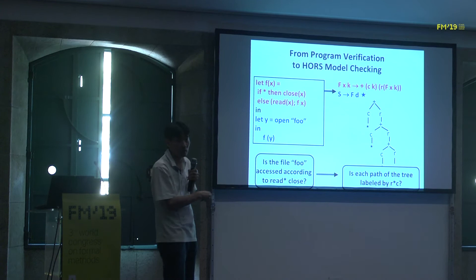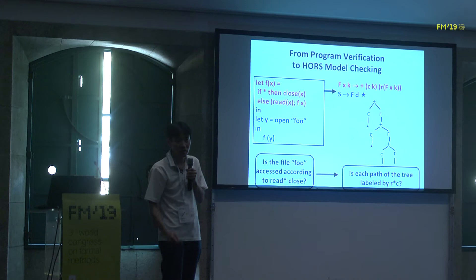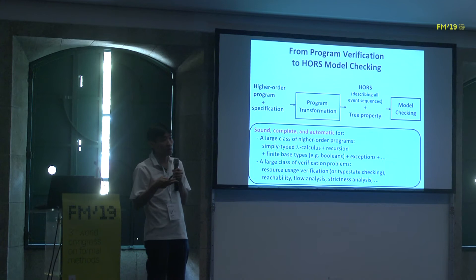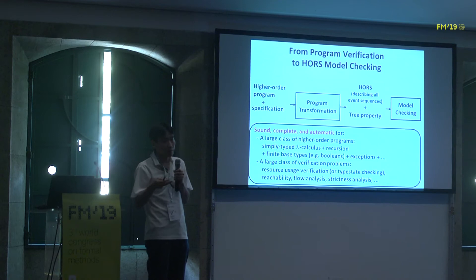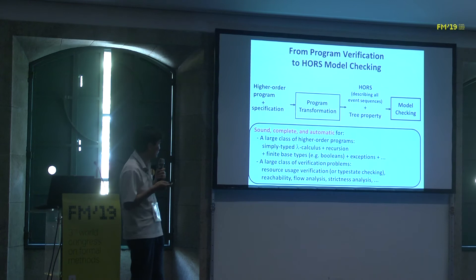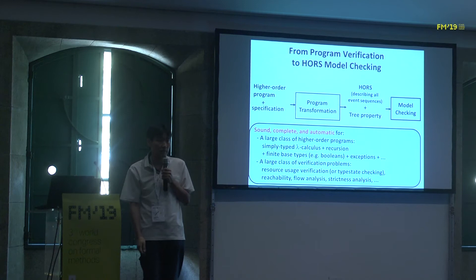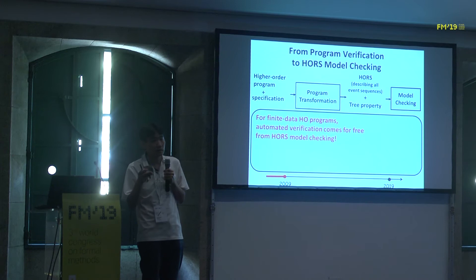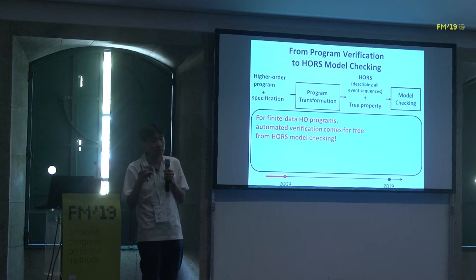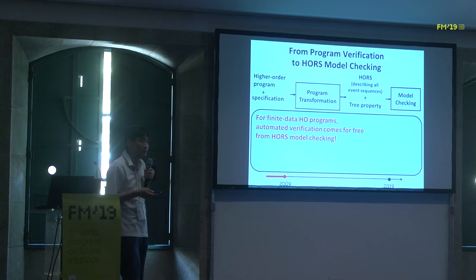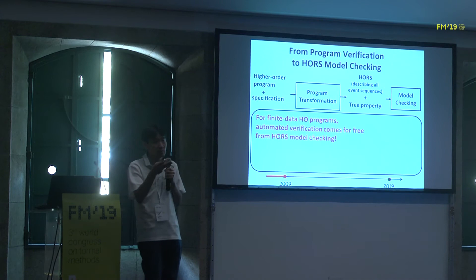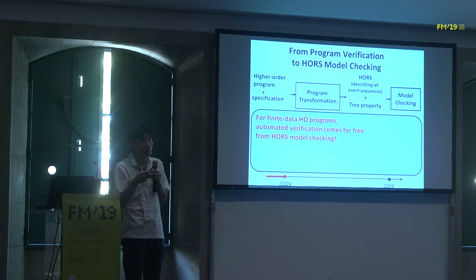This approach of using program transformation to reduce verification problems to HORS model checking turned out to be quite robust, providing a sound, complete, and fully automatic method for a fairly large class of programs and verification problems. For finite-data higher-order programs — where by finite data I mean data over finite sets like Booleans — automated verification comes for free from HORS model checking: just apply some program transformation. For infinite-data higher-order programs, we can still apply some abstraction to get a sound but incomplete method.